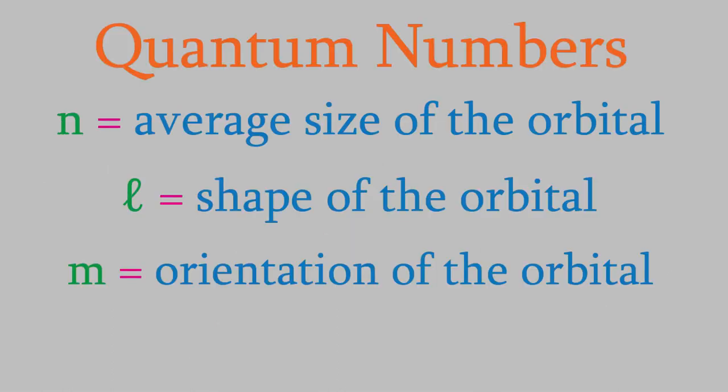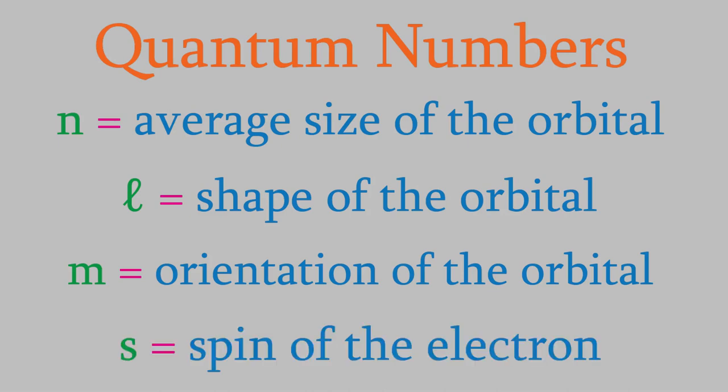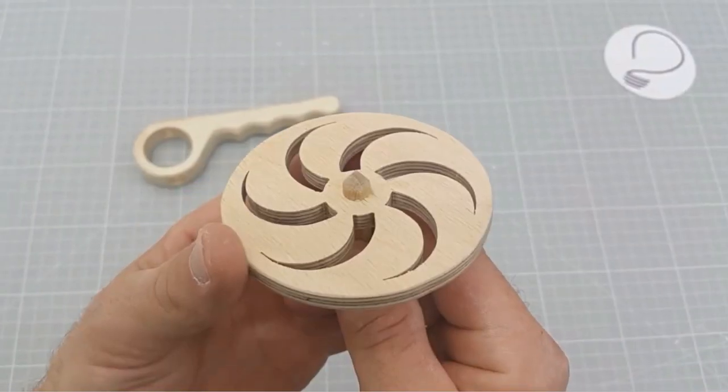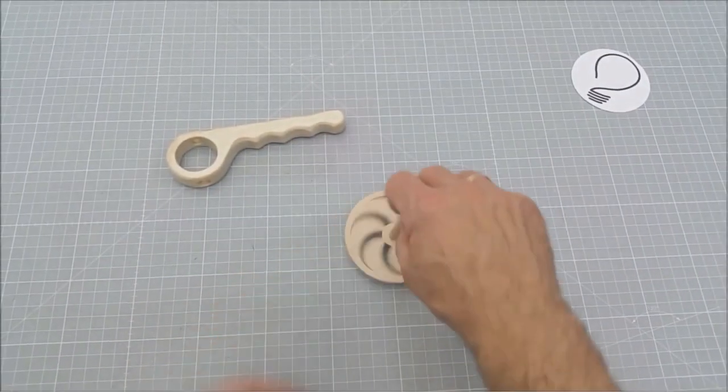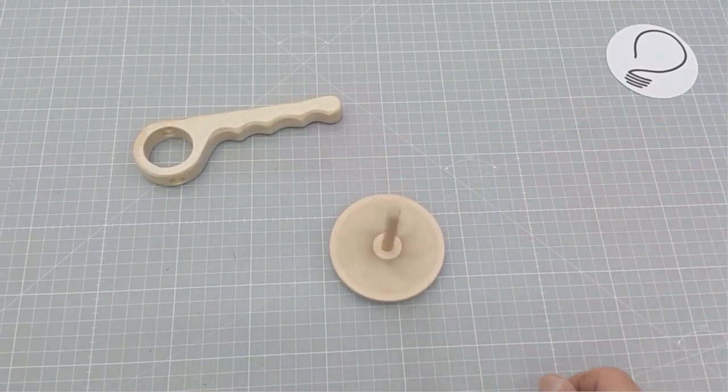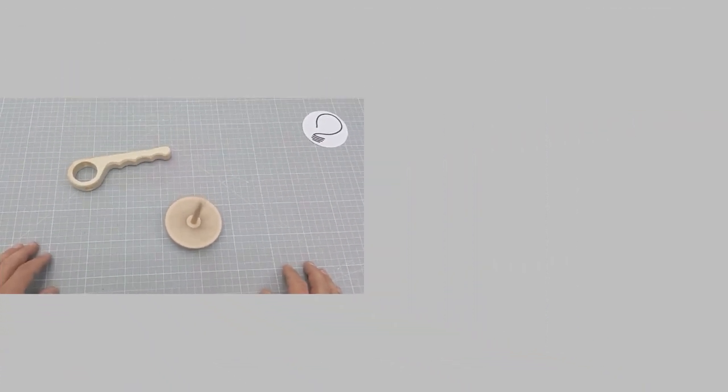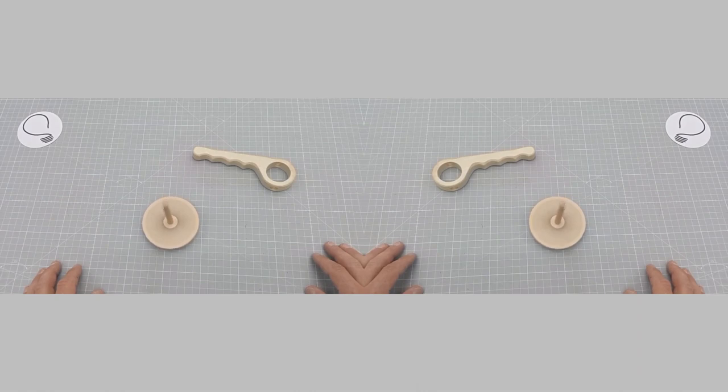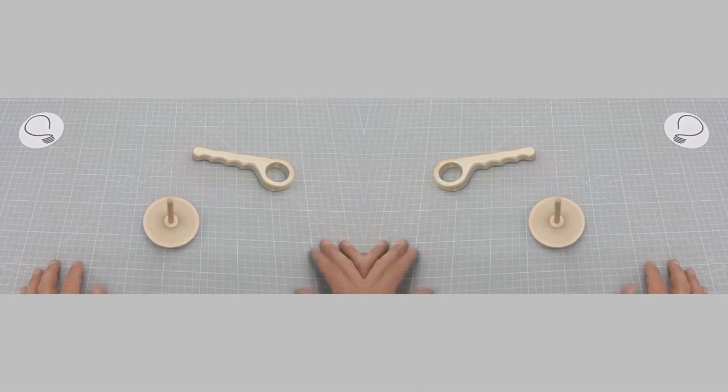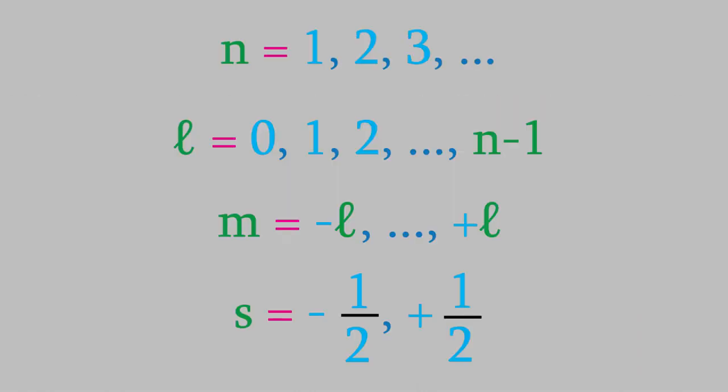The fourth and final quantum number has the symbol S, and it tells us the spin of the electron. It turns out that electrons behave as though they're spinning like a top. This spin can have one of two values. You can think of it as a top spinning clockwise or counterclockwise. So, there are two possible values for the quantum number S, and these are positive one-half and negative one-half. Every electron has a value of either plus or minus one-half for S, no matter what orbital it's in.